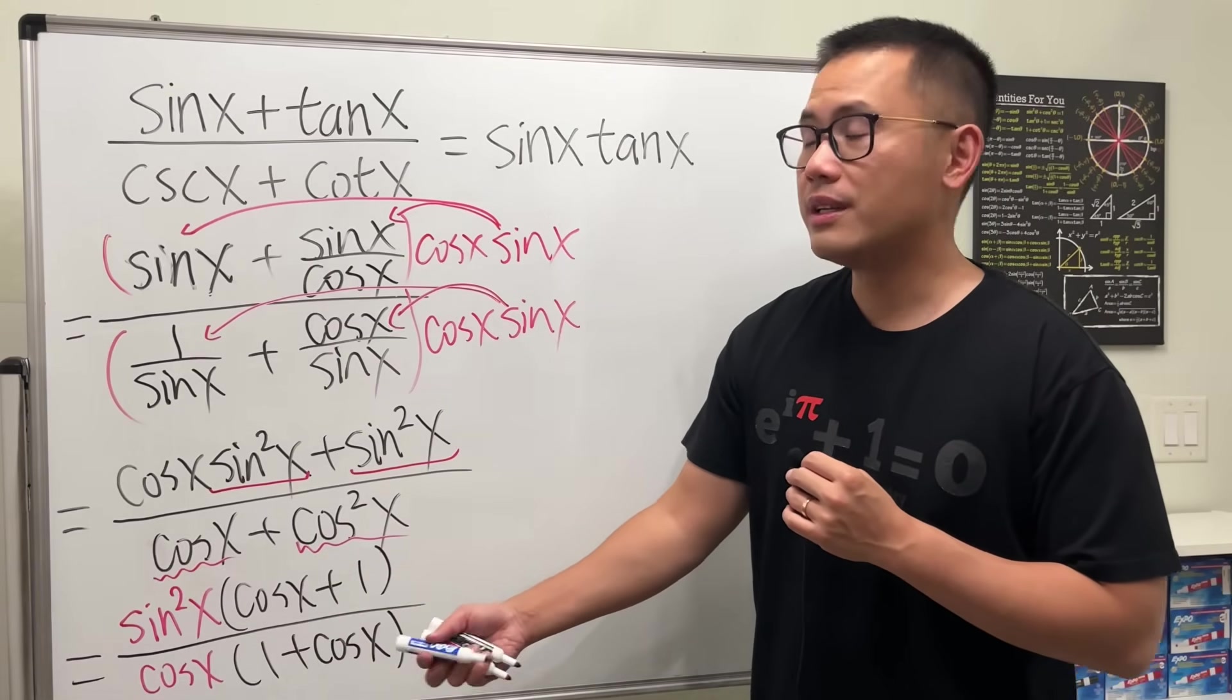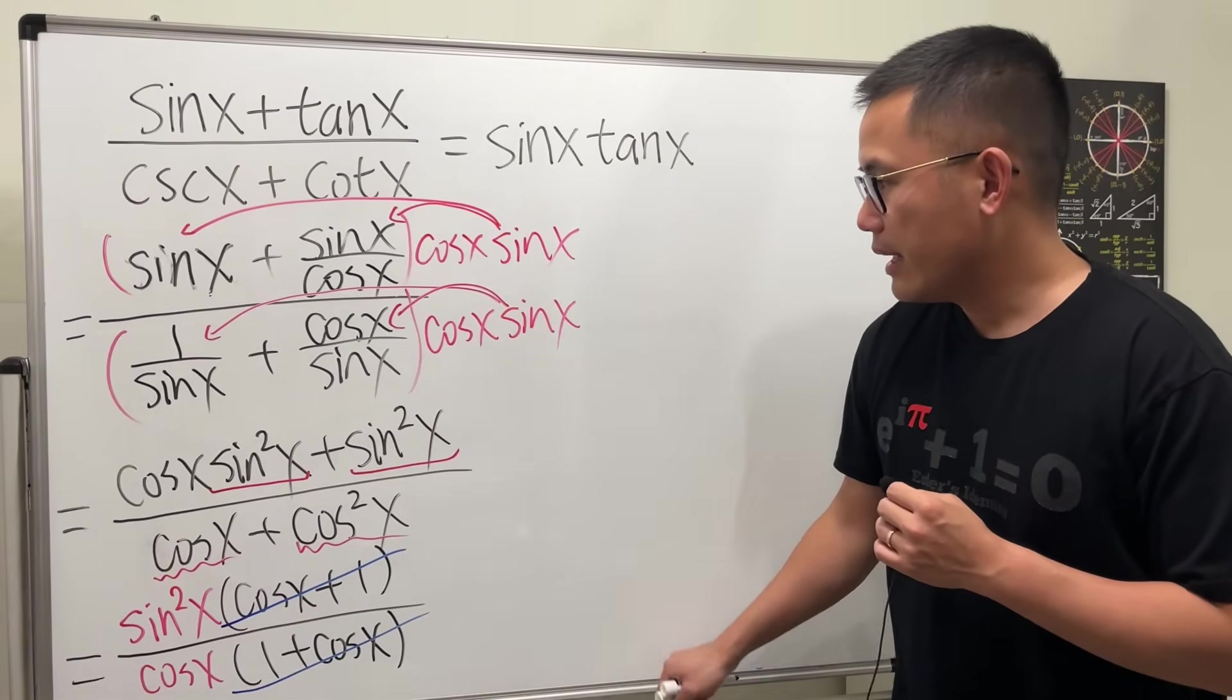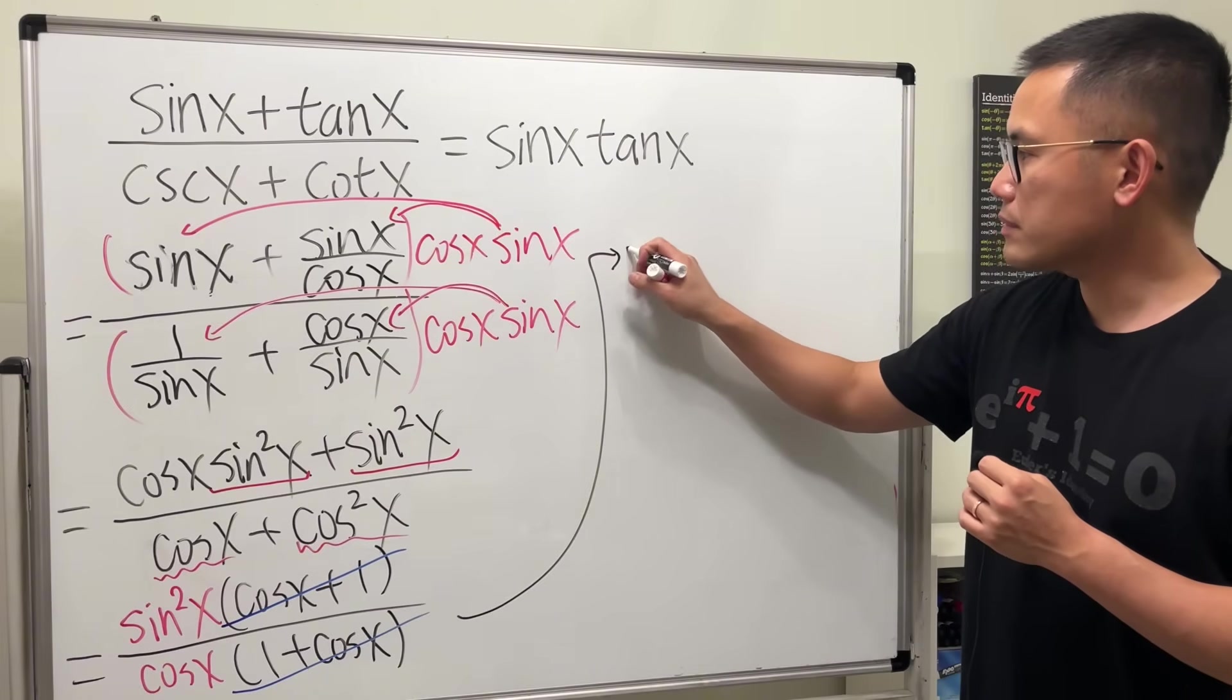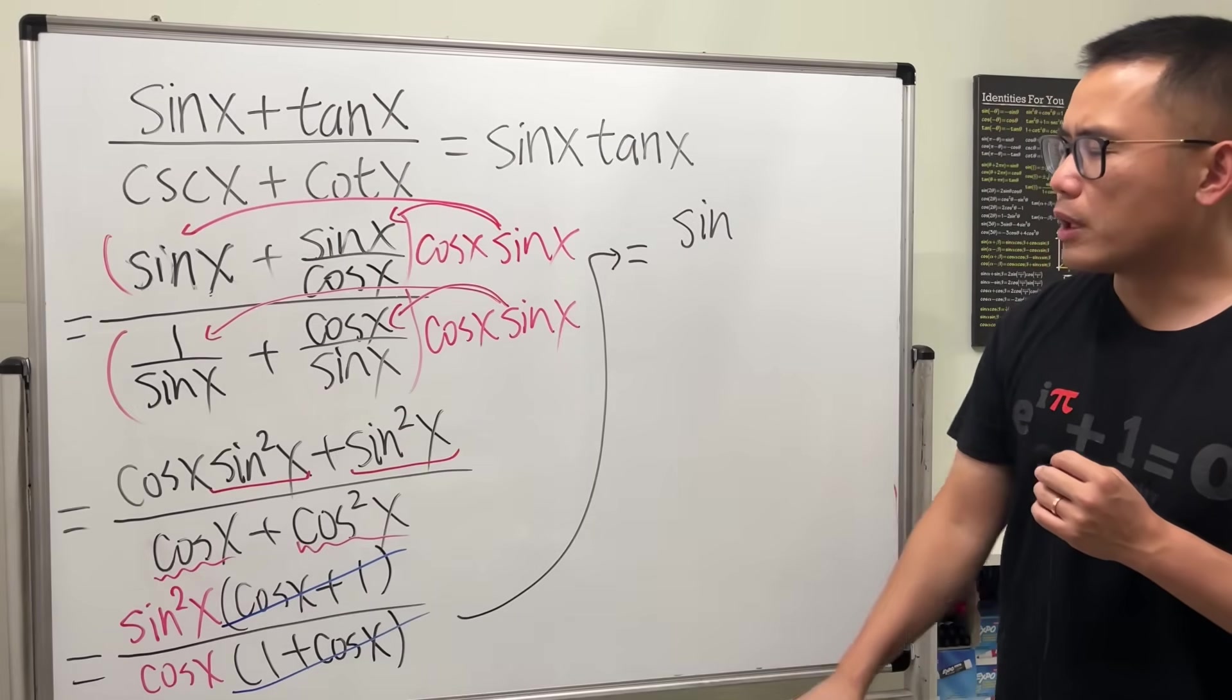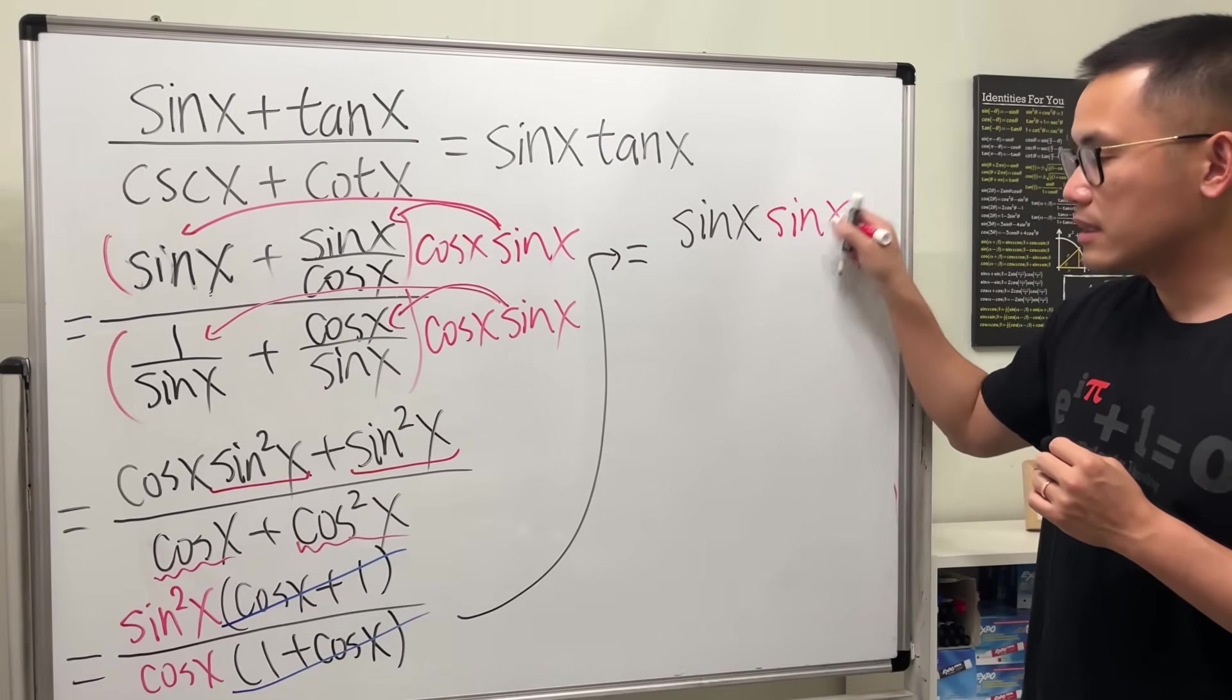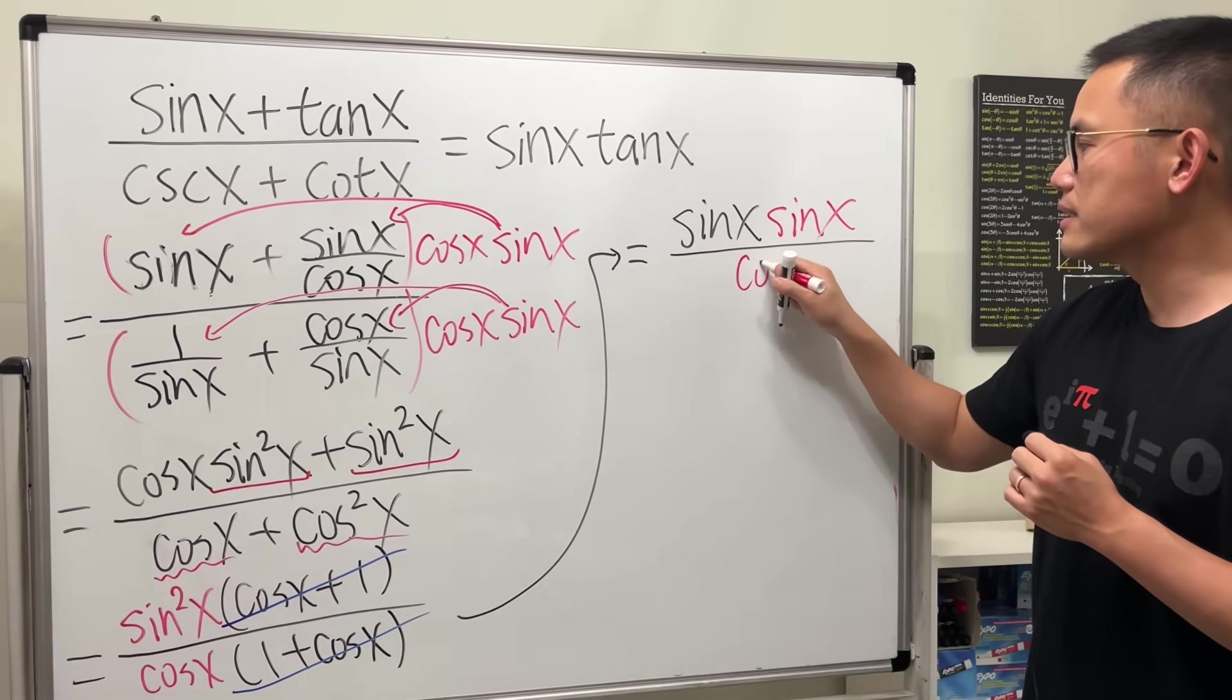Now we get sine squared x over cosine x. I'm going to purposely write sine squared x as sine x times sine x. That's the same, and over that we have cosine x.